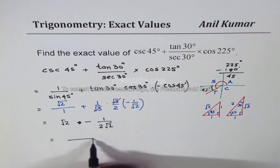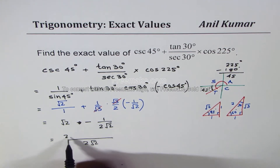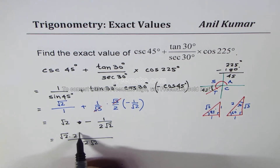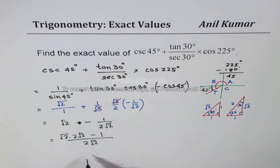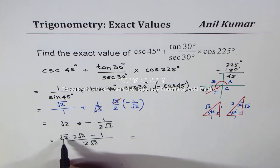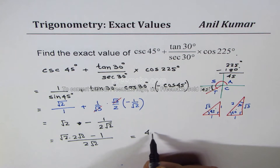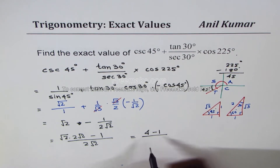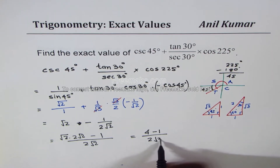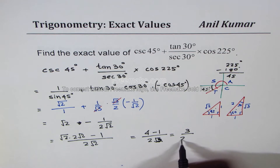The normal way is to take common denominator, which is 2 square root 2. We multiply square root 2 by the first term, giving us square root 2 times 2 square root 2 minus 1. We can go one more step: square root 2 times square root 2 is 2, times 2 is 4, so we get 4 minus 1 divided by 2 square root 2.